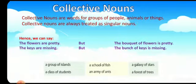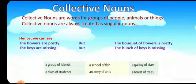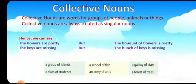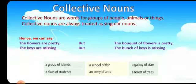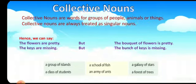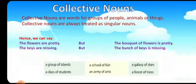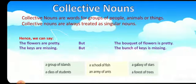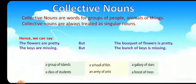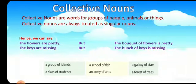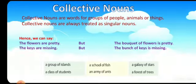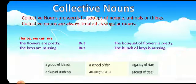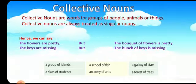Collective nouns — the word itself tells us that it is a collection. Collective nouns are words for groups of people, animals, or things, and they are always treated as singular nouns. For example: the flowers are pretty — here flowers are many, so we use a plural verb. But the bouquet of flowers is pretty — here flowers are many, but the bouquet is one only. Bouquet is a collective noun, so we use a singular verb. The same way: the keys are missing, but the bunch of keys is missing.